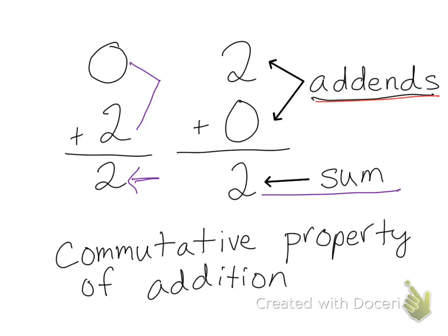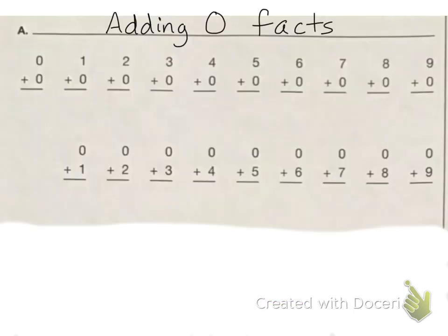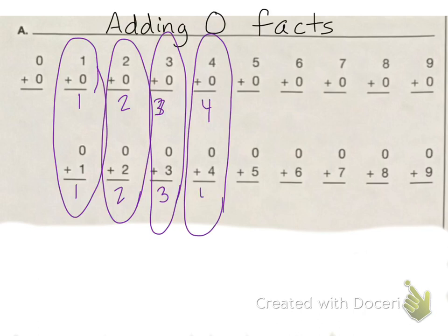What do you notice about these two problems? The order of the addends is different, but the sum is the same. So zero plus two is two, and two plus zero is two. This is called by mathematicians the commutative property of addition. So over here we have our adding zero facts — you can see other examples of this. These show the commutative property because they both equal one, both equal two, and so on. All of these numbers are showing the commutative property, which is that I can add numbers in any order and get the same answer.